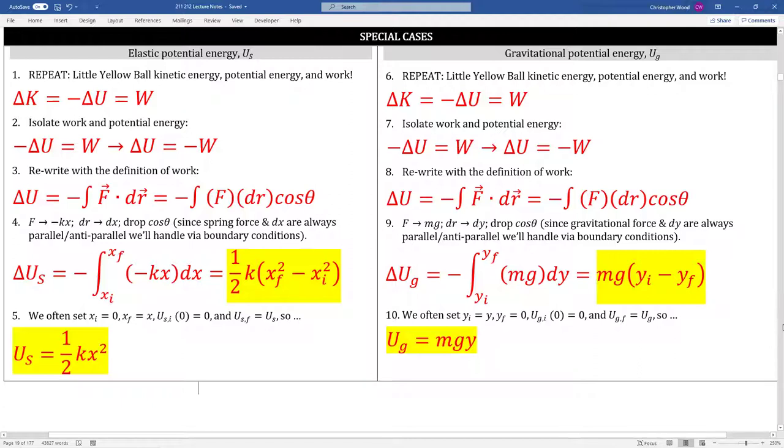Boxes six through seven derive gravitational potential energy. This is sort of a special case of a special case. This derivation, again boxes six through ten, apply to situations where the object is on or near the Earth's surface. We'll derive a general expression for gravitational potential energy in chapter 13 that doesn't have this restriction.